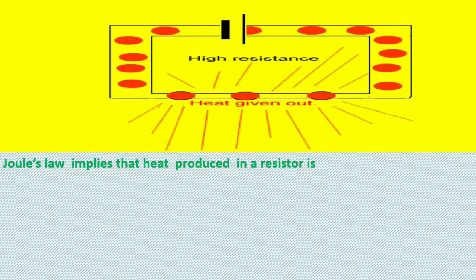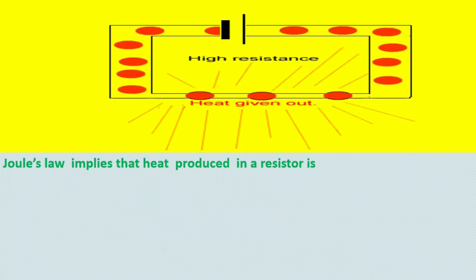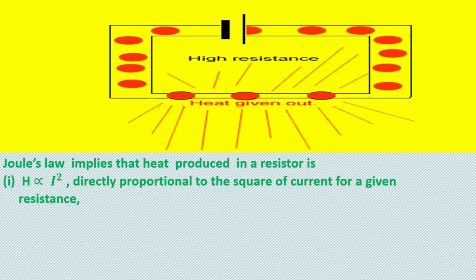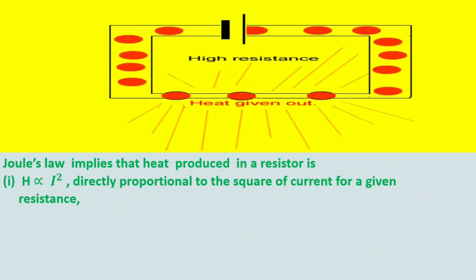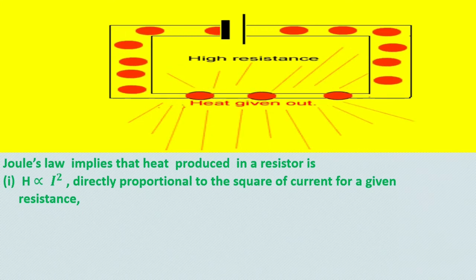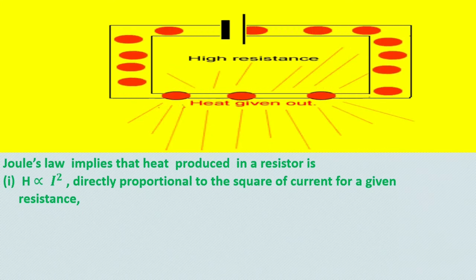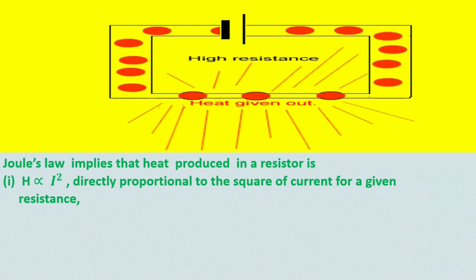Joule's law implies that heat produced in a resistor is directly proportional to the square of the current for a given resistance. As the current through the resistor increases, the heat produced also increases and vice versa.